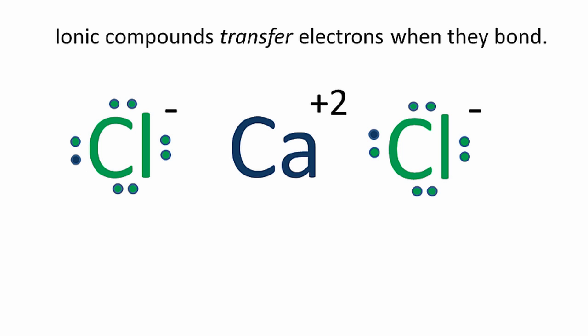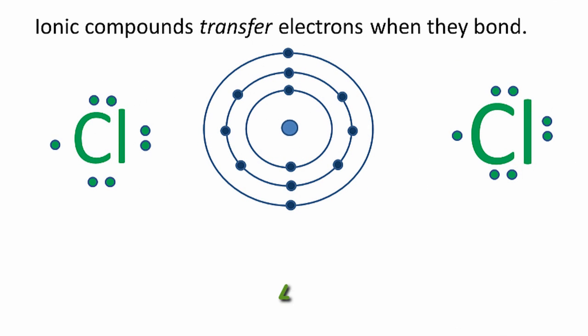But what about the calcium? Does it have an octet? So let's take a look at that. So here we have in the center calcium. This is a Bohr diagram. It's a simple way to show the electron arrangement around an atom. And then we have our two chlorine atoms.